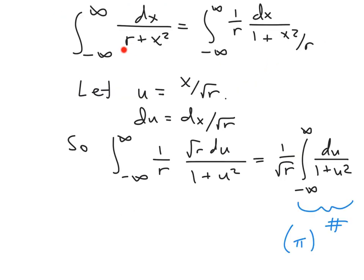I'm going to do basically a little bit of manipulation. First, I'm going to pull this r out from the equation. So I get 1 over r and 1 plus x squared over r. Now, x squared over r is pretty suggestive of a u substitution. So I'm going to do the u substitution that suggests. I'm going to let u equal x over the square root of r, and that tells me that du is dx over the square root of r.